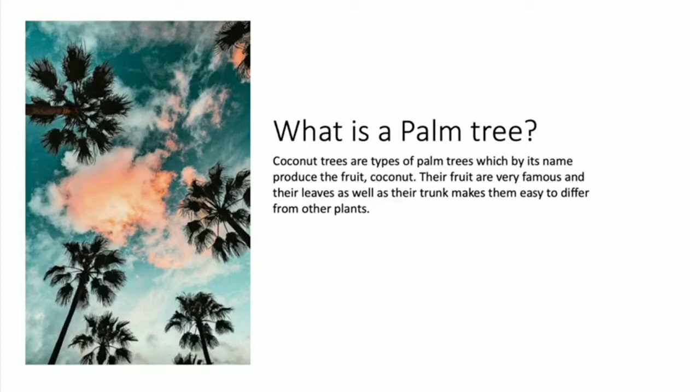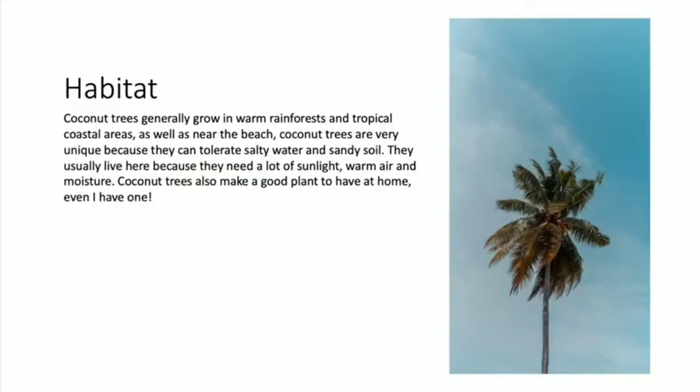Their leaves as well as their trunk make them easy to distinguish from other plants. Habitat: coconut trees generally grow in warm rainforests and tropical coastal areas, as well as near the beach. Coconut trees are very unique because they can tolerate salty water and sandy soil.